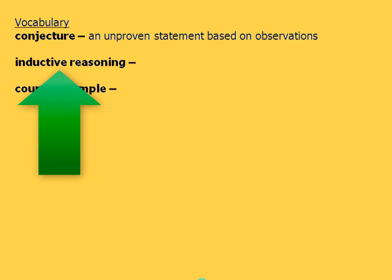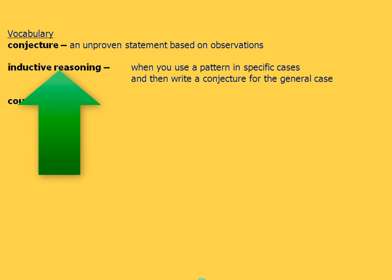Now, inductive reasoning, that is when you use a pattern in specific cases and then write a conjecture for the general case. So we're going to take a look at specific things that are going on in a pattern. We're going to say, hey, based on this pattern, we're going to make a conjecture or a rule about a general case.